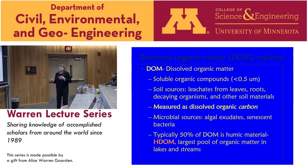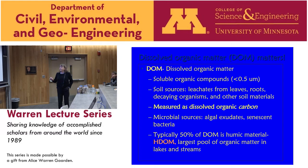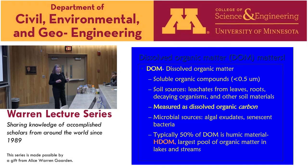I'll start off by highlighting what dissolved organic matter is and why it matters. We define it as soluble organic compounds that are nominally less than 0.5 microns. Sources include soils, leachates of leaves, and microbial sources. It's measured as dissolved organic carbon — the material is generally about 50% carbon, but that's what we can measure.